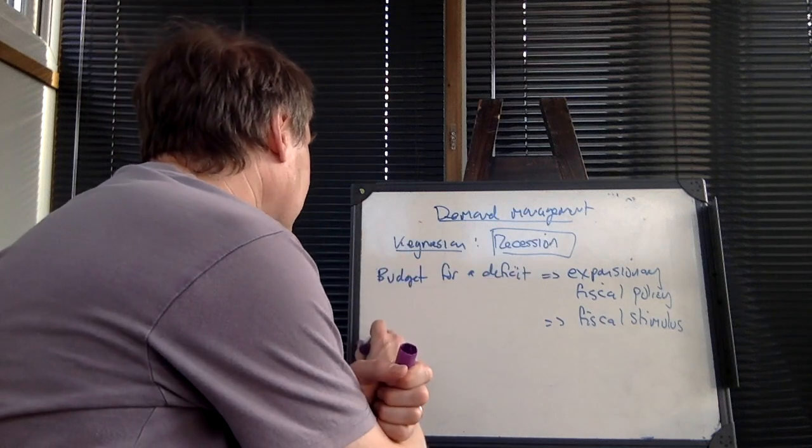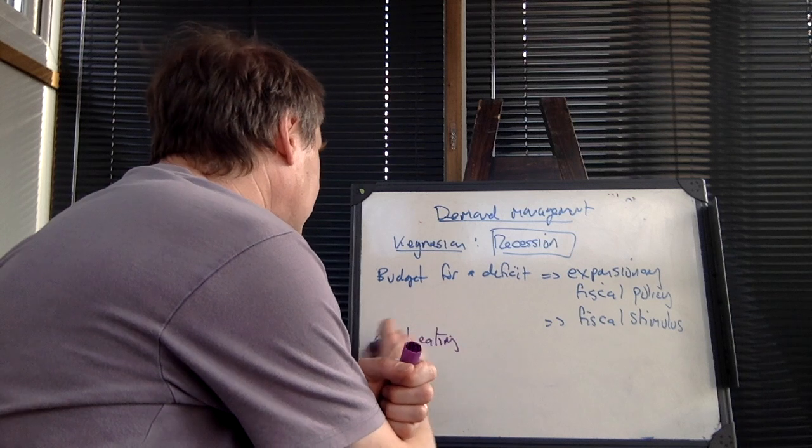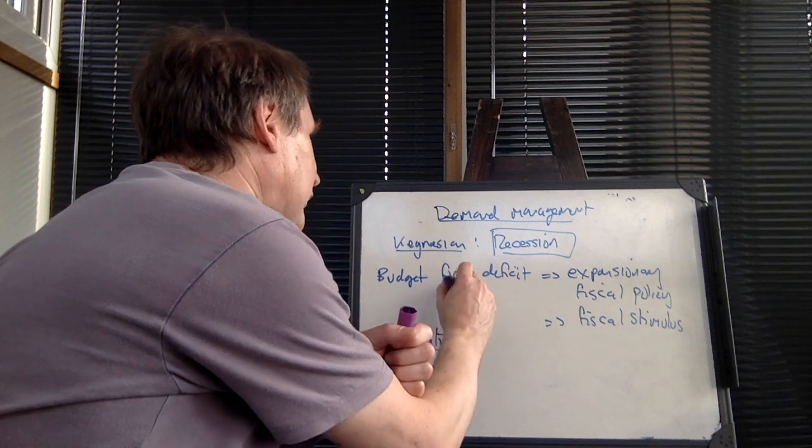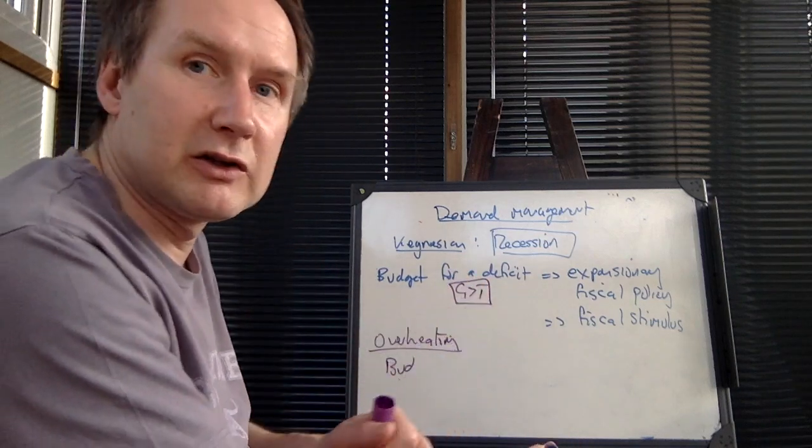If the economy is overheating, if the economy is growing far too quickly, then you could budget for a deficit. Sorry, it means that government spending is greater than tax. So therefore you're borrowing.